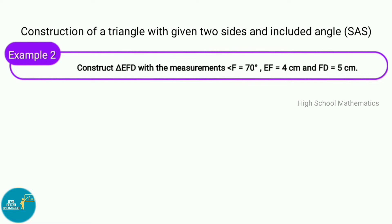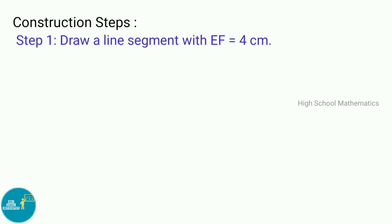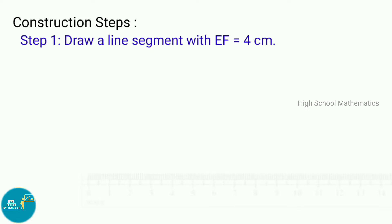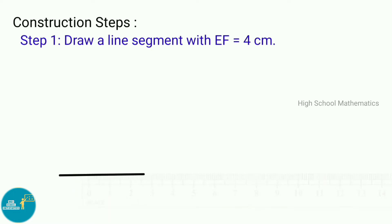Example 2: Construct triangle EFD with the measurements angle F equal to 70 degrees, EF equal to 4 centimeters, and FD equal to 5 centimeters. Construction steps — Step 1: Draw a line segment EF equal to 4 centimeters.